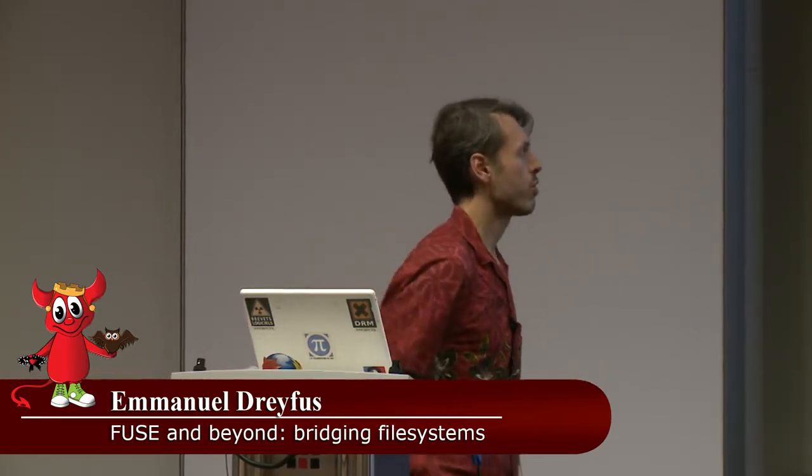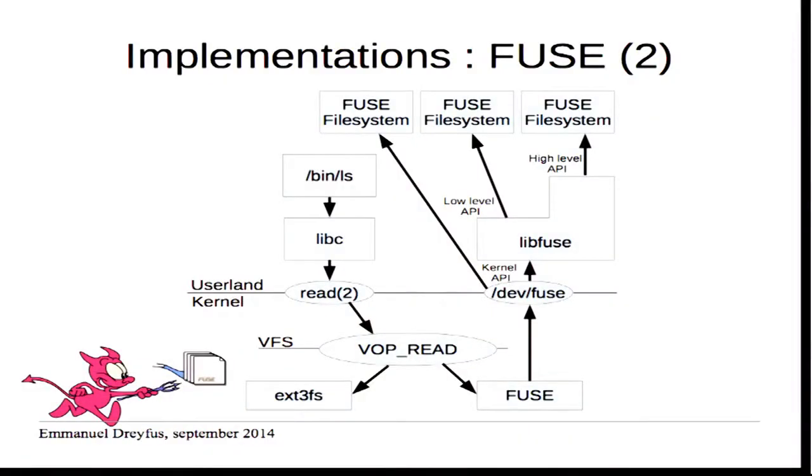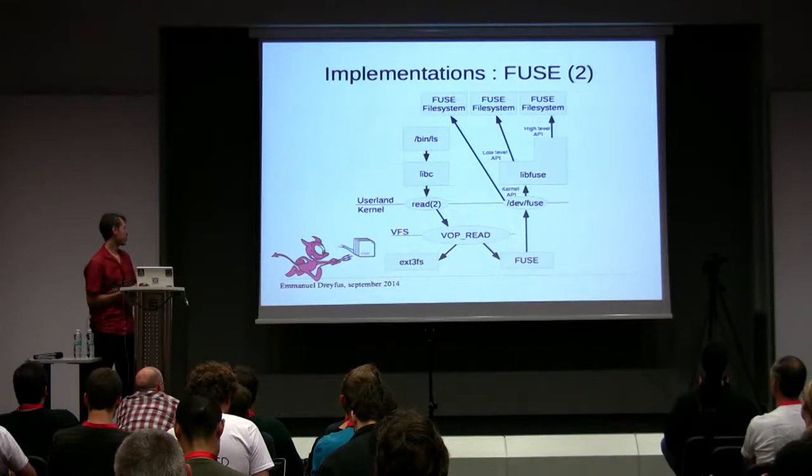In this diagram you see how FUSE works. A process like LS issues a system call such as read through the libc. Once the system call executes inside the kernel it reaches the VFS layer. If it's a FUSE file system, a FUSE stub inside the kernel immediately sends the request through /dev/fuse to userland. From there you have three options: directly connected to /dev/fuse using the kernel API, or through libfuse using either the low-level or high-level API.